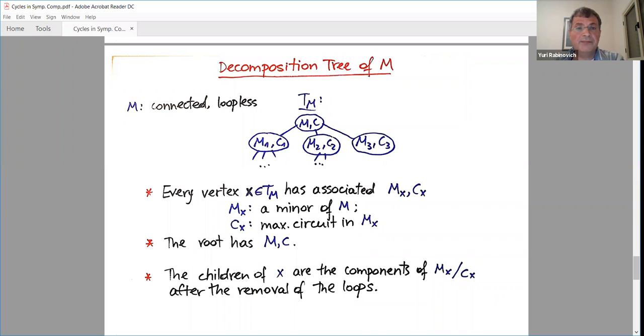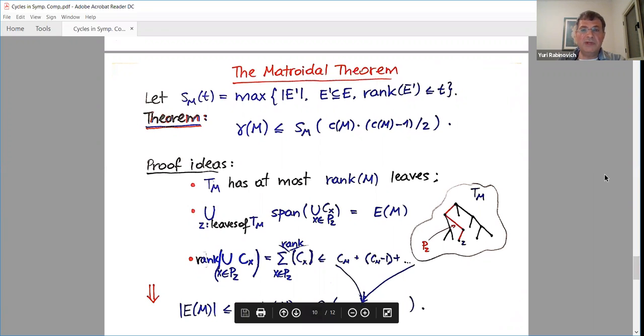So what is the decomposition tree good for? Using this decomposition tree, we can prove the following. Let S_M(T) be a function, a numerical function of this matroid, which will be the maximal size of the maximal subset of edges which have rank at most T. And you may remember that rank is the maximum independent size. And the theorem is that the density of M is at most this function of C(M) squared, something like this. And this is a useful theorem because we can compute this S_M in interesting cases that are interesting for us. And reversing it, we can obtain lower bound of the desired form. We'll see it.